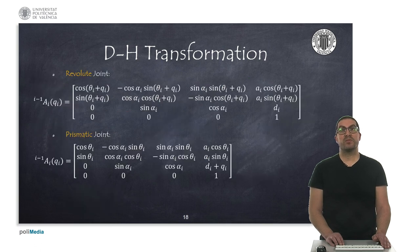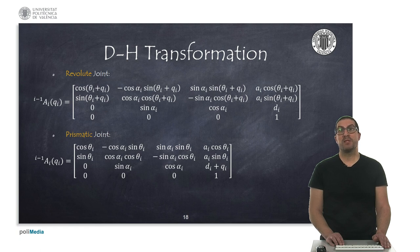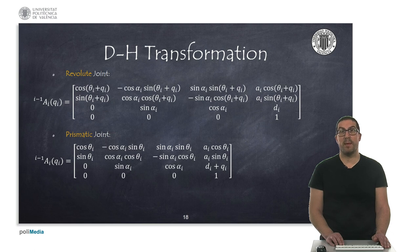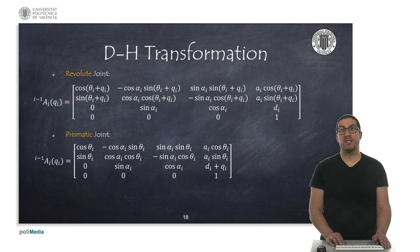The Denavit-Hartenberg transformation matrix depends exclusively on constructive parameters of the robot, although the joint values q_i will be added to some of these parameters. Specifically, if we have a revolute joint, the joint value is added to the parameter Theta, which corresponds to the rotation in Z, since the Z axis always points in the direction of the joint. On the other hand, if the joint is prismatic, we have a displacement in the Z axis, and therefore the joint value q_i will be added to the parameter D_i in the Denavit-Hartenberg transformation matrix.